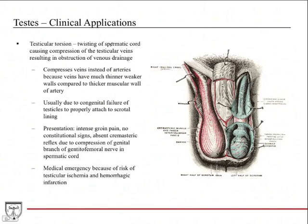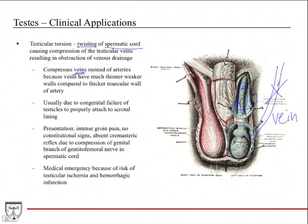Testicular torsion is a very serious condition similar to ovarian torsion — it involves twisting of the spermatic cord. The key point is that it's not primarily about compressing the arteries, because arteries have a thick muscular wall and are not easily compressed, so arterial blood flow is maintained. The problem is compression of the venous drainage. This causes a buildup of pressure and blood backs up into the testicle instead of being drained, leading to an increased risk for hemorrhagic infarction, and it can even result in loss of the testicle.